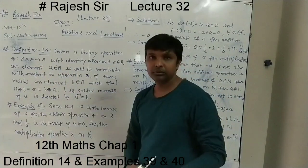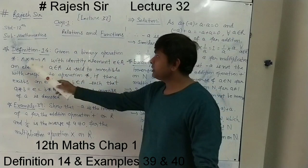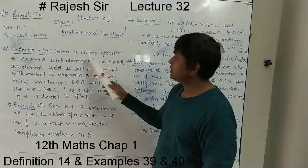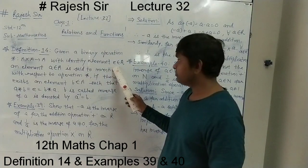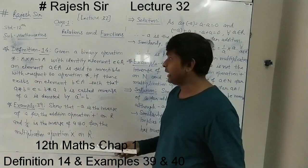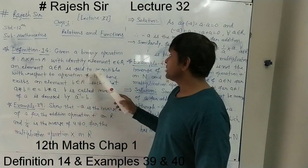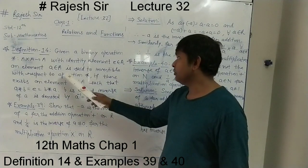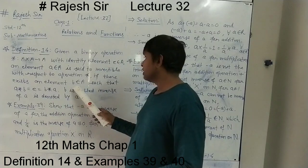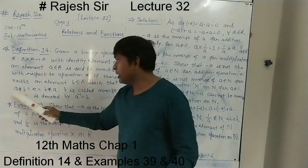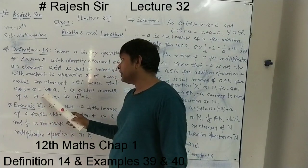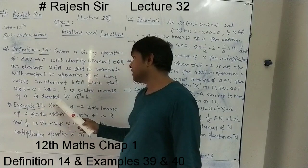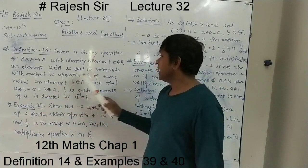Definition 14. We have the next definition. We are given a binary operation from A cross A to A with identity element E belonging to A. An element A belonging to set A is said to be invertible with respect to the binary operation if there exists an element B also belonging to A such that A binary B equals E and B binary A also equals E. If this happens, B is called the inverse of A, denoted as A inverse equals B, where E is the identity element.